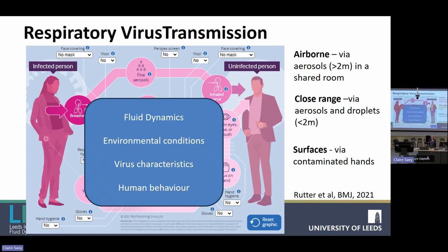Some viruses require exposure to a very high amount to cause infection, while others require tiny amounts. We think the infectious dose for COVID is very low, as is true for norovirus — anyone with children knows how easy it is to catch norovirus. Mpox, previously known as monkeypox, is a good example in the other direction: you find the virus everywhere in the environment, on surfaces and in the air, but transmission was clearly only happening at very close proximity, suggesting a much higher threshold infectious dose.